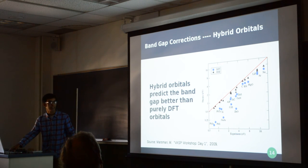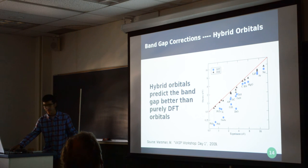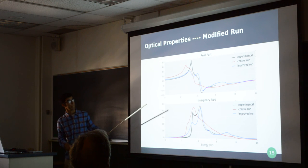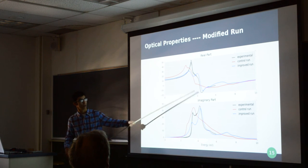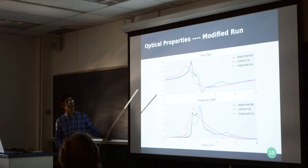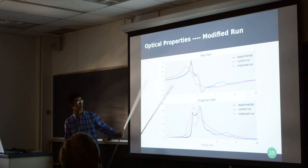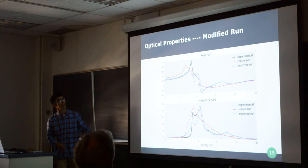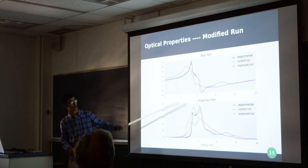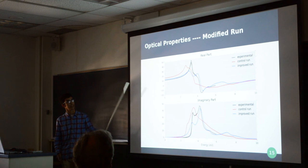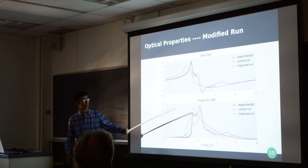Now, taking all this into consideration, we get a modified run, so to speak. The blue is the modified run. The red is the control run, or the first run, the preliminary run that I did. While the black is experimental data that I found. And, you can see that the blue is, in general, much closer to the experimental data than the control run. And, that tends to be the best that I found that theory can do.